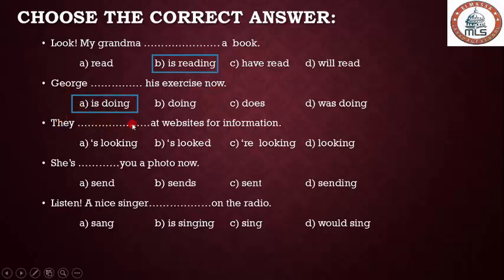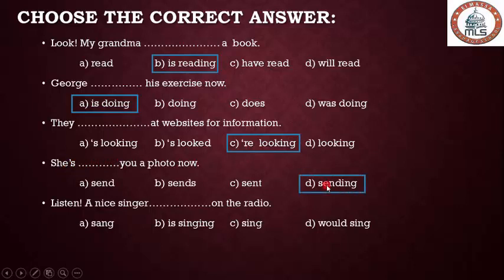Number three: 'They ___ at a website for information.' 'They' is followed by 'are,' so the answer is 'they are looking at the website.' Number four: 'She ___ a message.' 'Is' is followed by '-ing,' so the answer is 'sending.' And: 'Listen! A nice singer ___ on the radio.' 'Listen' refers to present continuous, so the answer is 'is singing.'